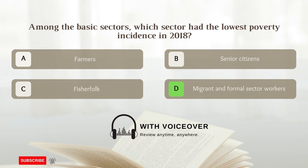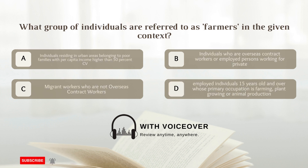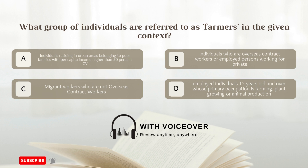What group of individuals are referred to as farmers in the given context? D. Employed individuals 15 years old and over whose primary occupation is farming, plant growing, or animal production.